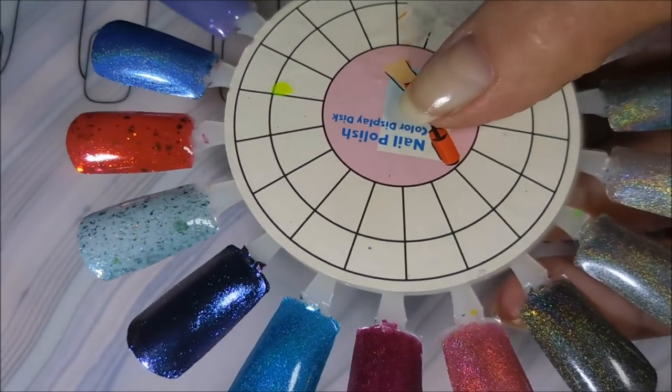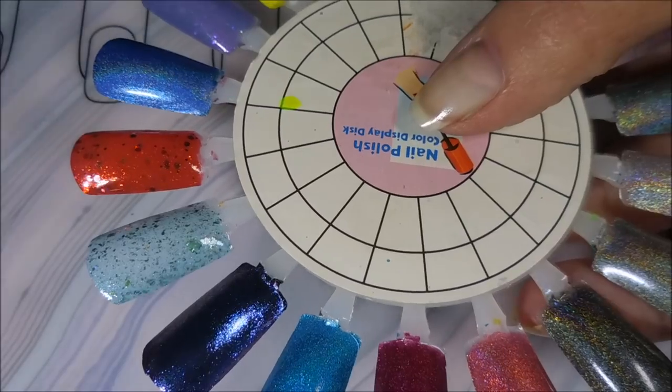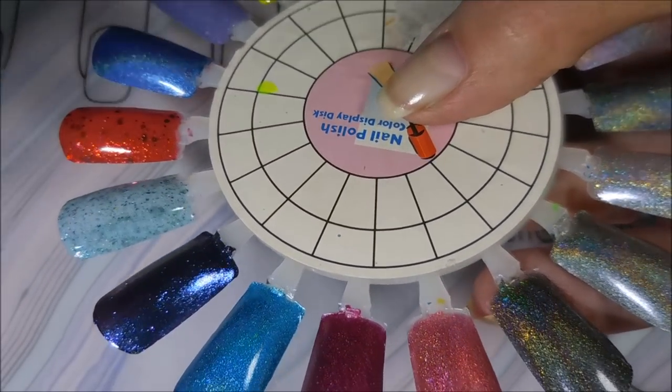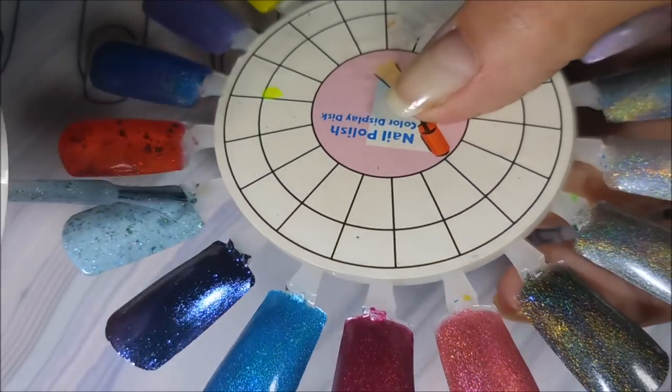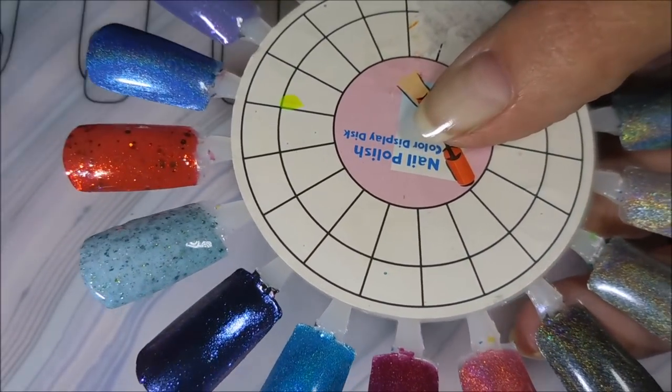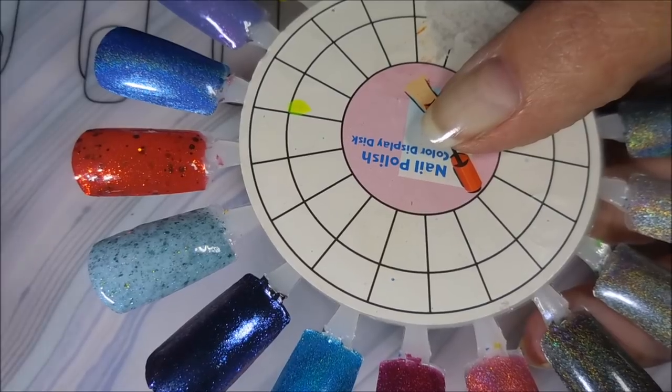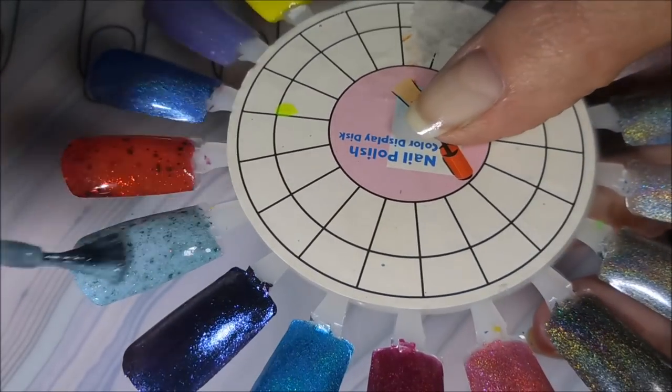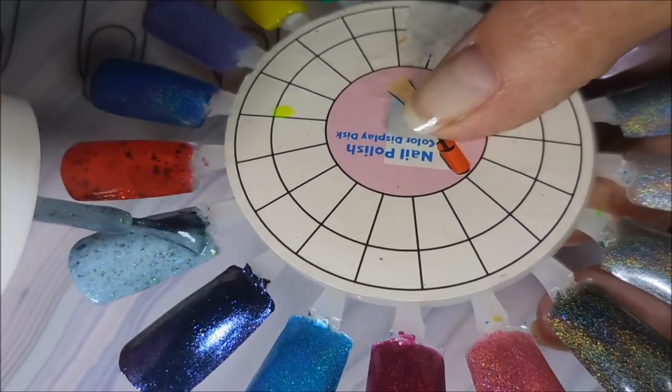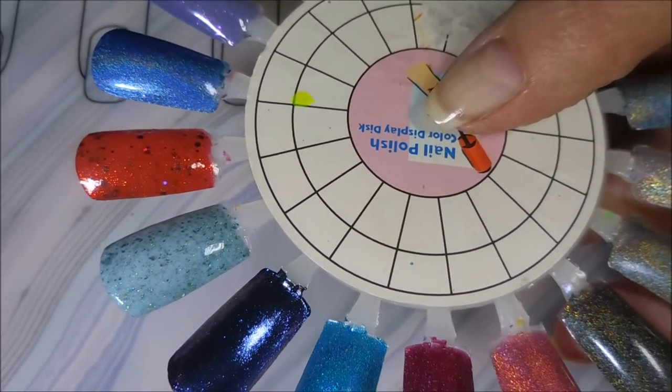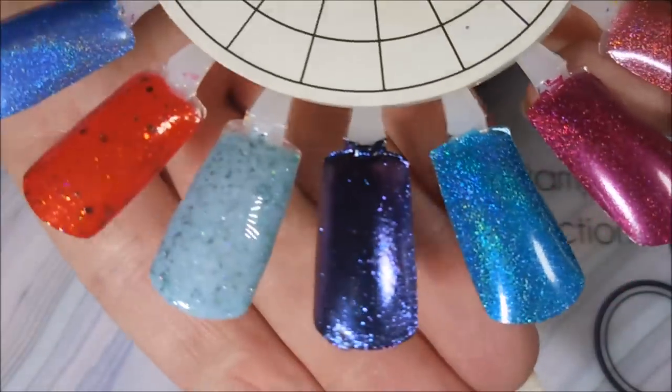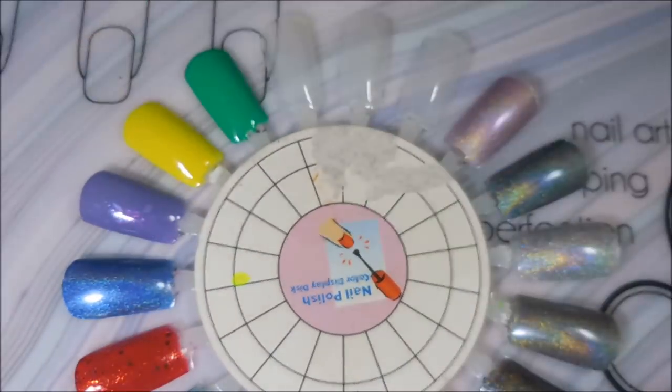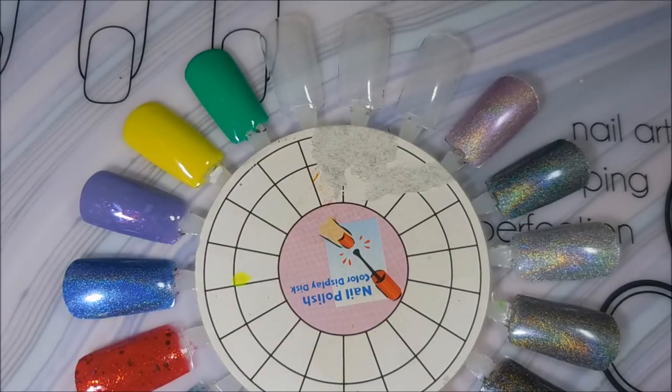I'm going to do one more coat of this Glitter Daze polish. And then I'm going to go off camera and put some top coat on these. So you can see them in their full glory. And we'll wrap this one up. Oh that's just insane pretty. The Prophecy. So there we go with that third coat. Totally built up. I love it. Alright. I will be right back with some top coated swatches.